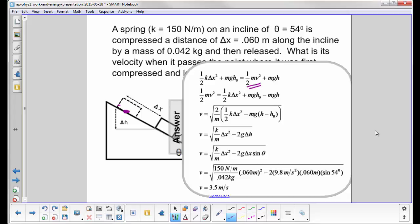We're trying to find velocity, so we isolate that term on the left-hand side, move the other terms around, multiply through by 2, divide by m, and take the square root.